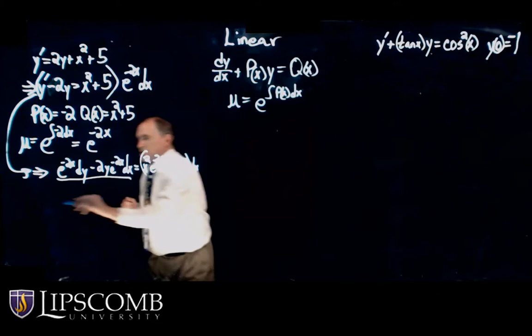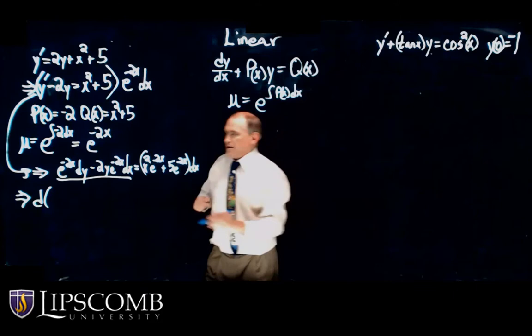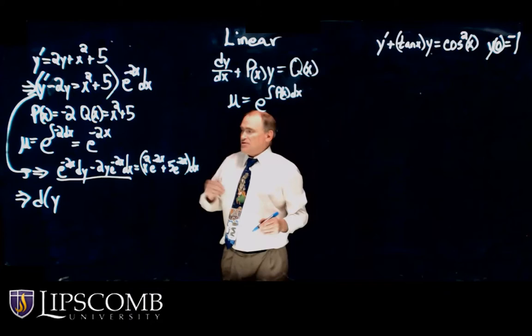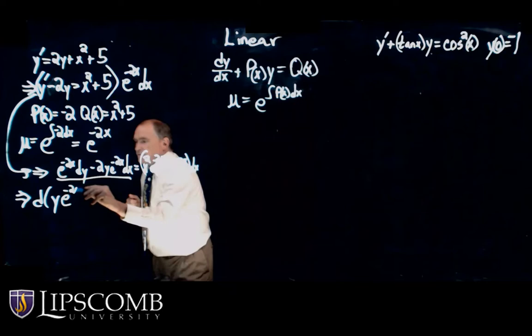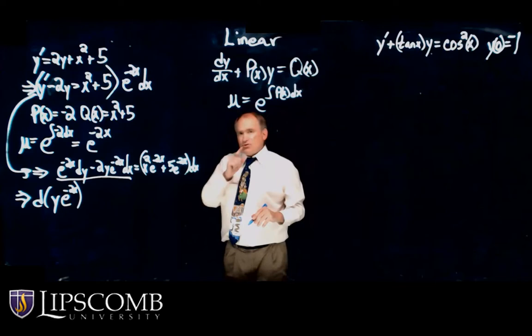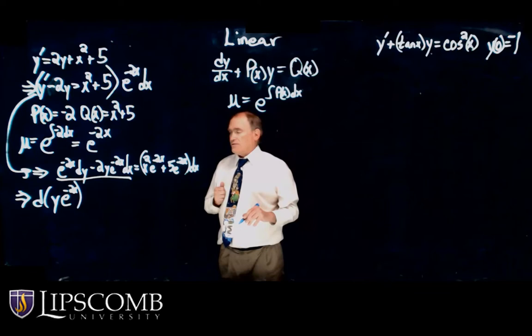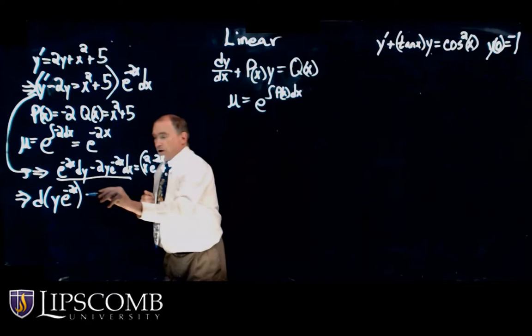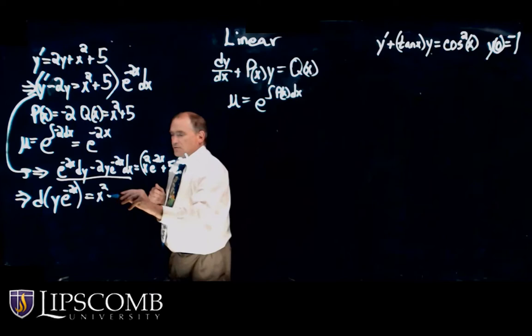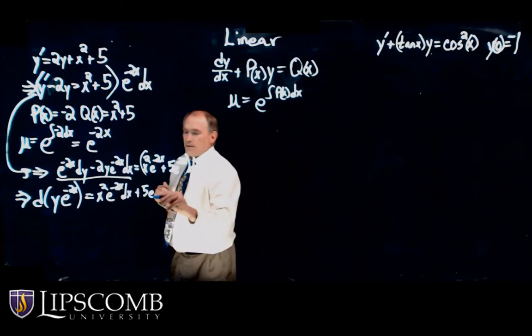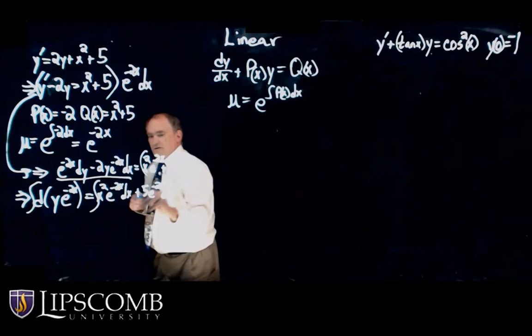Looking at the left side, it's the total differential — and it's always going to be the total differential of the unknown function (y in this case) times the integrating factor e to the minus 2x. That's always what's on that side. Now I need to integrate. The integral of a sum is the sum of the integrals, so I'm going to split this up and integrate both sides.